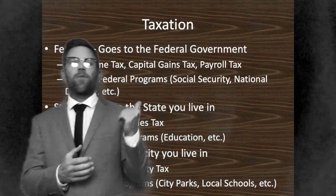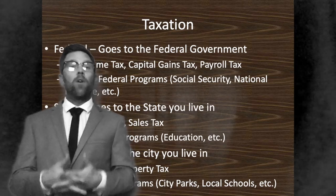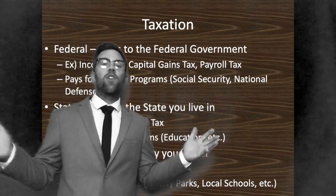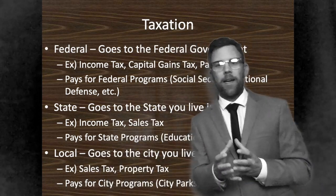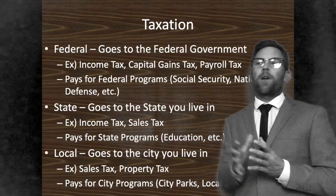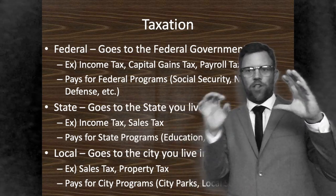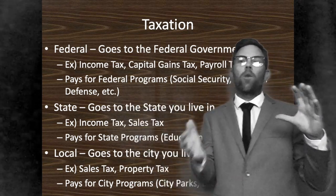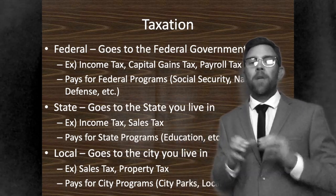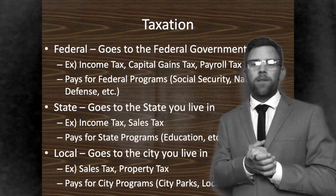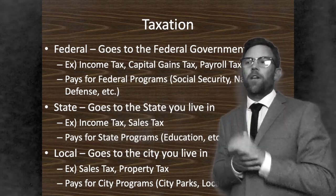Let's start with the federal level first. The federal level of taxation goes to the federal government — that's also going to be the largest tax collection in the United States. Examples of this would be income tax. When you get a paycheck and the money's already been taken out, that's called a withholding tax. That comes straight out of your income and gets split: most goes to the federal level and another chunk goes to the state level.